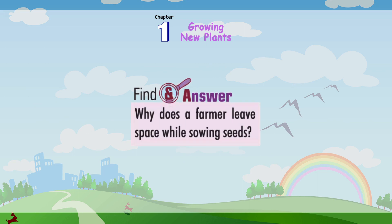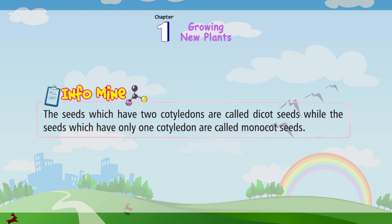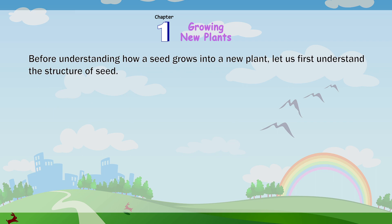Find and answer: Why does a farmer leave space while sowing seeds? Info mind: The seeds which have two cotyledons are called dicot seeds, while the seeds which have only one cotyledon are called monocot seeds. Before understanding how a seed grows into a new plant, let us first understand the structure of a seed.